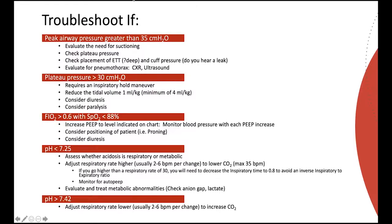If the pH is less than 7.25, assess whether the acidosis is respiratory or metabolic. Adjust the respiratory rate higher, usually two to six breaths per minute, to lower carbon dioxide levels. You want to avoid a respiratory rate greater than 35 breaths per minute. If the rate exceeds 30, decrease the inspiratory time on the ventilator to 0.8 seconds to avoid an unfavorable inspiratory-to-expiratory ratio. Increasing respiratory rates also requires monitoring for auto-PEEP. Evaluate and treat metabolic abnormalities by checking anion gap or lactate levels.